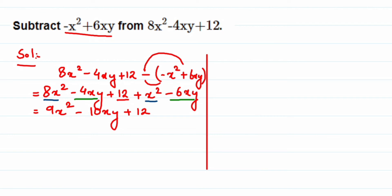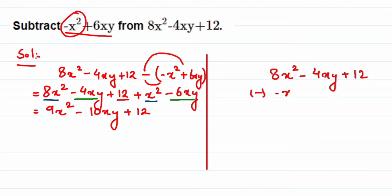Now for the column or vertical method. Write the second expression first: 8x squared minus 4xy plus 12. Then below it, align the like terms of the first expression. So minus x squared goes below 8x squared, and plus 6xy goes below minus 4xy. There are no constants, so you can put 0 there.